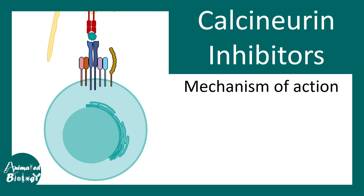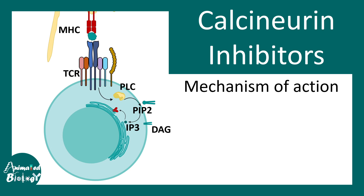Looking at the overall process of activation in more molecular detail: the TCR ultimately activates phospholipase C, an enzyme that cleaves PIP2, which is a membrane phospholipid, and creates second messengers like IP3 and DAG. IP3 can bind to the IP3 receptor present on the endoplasmic reticulum and allow the internal store of calcium to be released into the cytosol. Cytosolic calcium rises and binds to calmodulin, and calmodulin-bound calcium can further activate calcineurin.